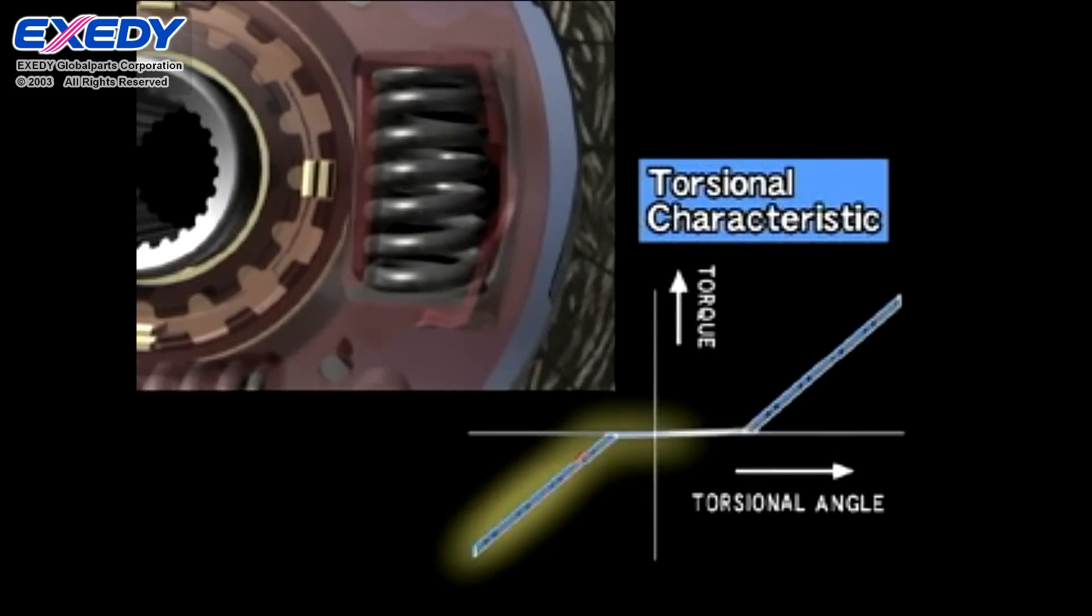During engine braking, the torsion springs are compressed in the opposite direction compared to when accelerating, to absorb the shock of deceleration.